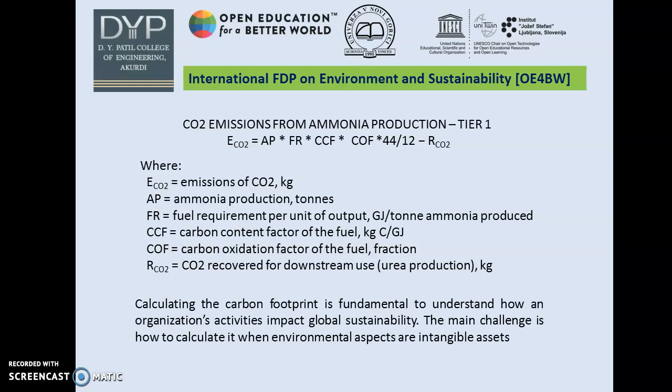As a case study, I have considered the CO2 emission from ammonia production. The formula is: ECO2 = Fe × FR × CCF × COF × (44/12) − RCO2, where ECO2 is CO2 emission in kg, Fe is ammonia production in tons, FR is fuel requirement per unit of output, CCF is carbon content factor of the fuel in kg C per GJ, COF is carbon oxidation factor of the fuel, and RCO2 is CO2 recovered for downstream use. Calculating the carbon footprint is fundamental to understanding how an organization's activities impact global sustainability.